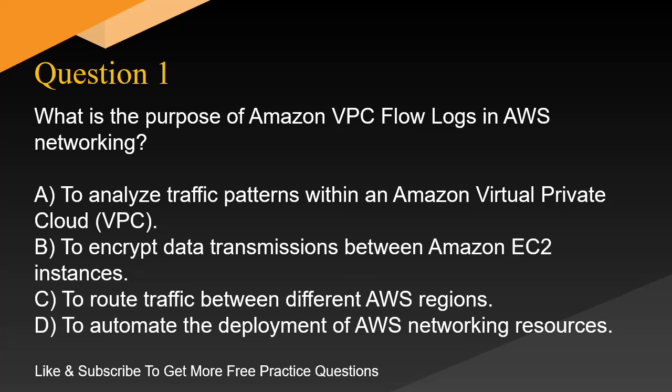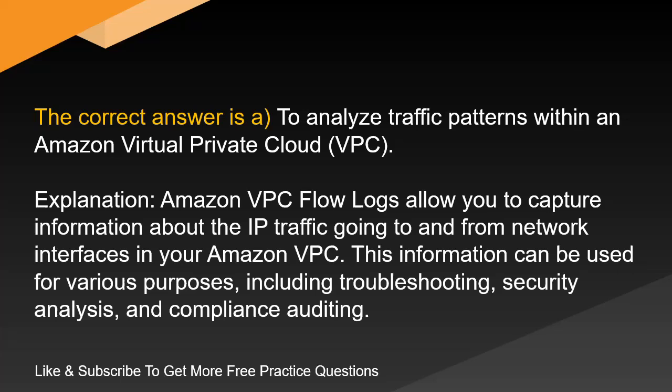Question 1. What is the purpose of Amazon VPC flow logs in AWS networking? A. To analyze traffic patterns within an Amazon Virtual Private Cloud, VPC. B. To encrypt data transmissions between Amazon EC2 instances. C. To route traffic between different AWS regions. D. To automate the deployment of AWS networking resources. The correct answer is A: To analyze traffic patterns within an Amazon Virtual Private Cloud, VPC.